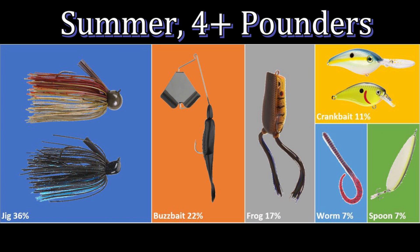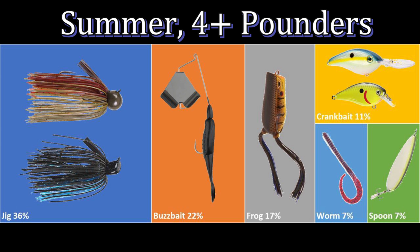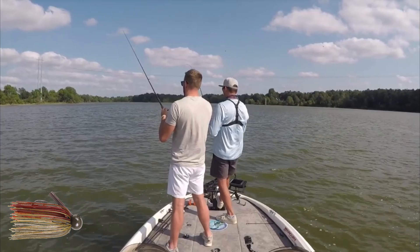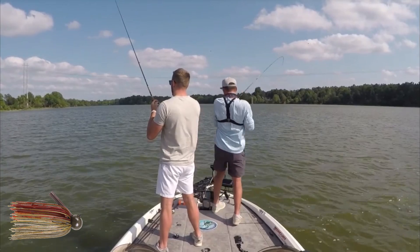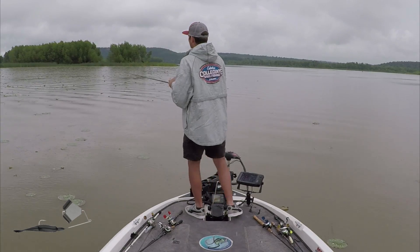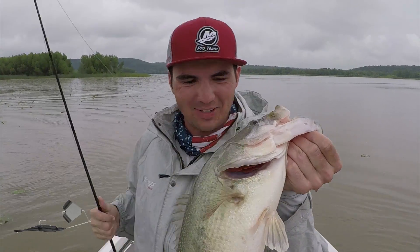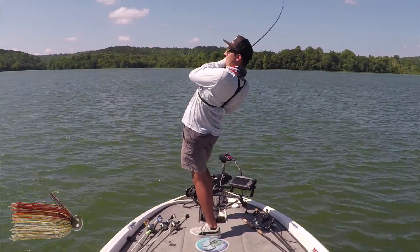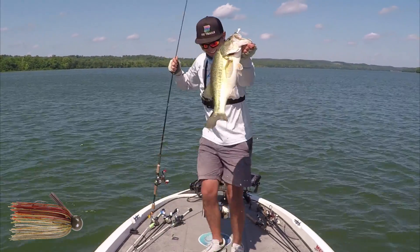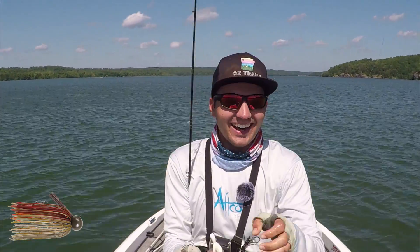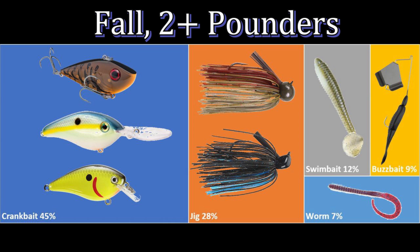Cutting summer data by size: 36% of my four-plus-pounders in summer came on a jig, 22% on the buzzbait, 17% on the frog, 11% on crankbaits, and 7% split between a worm and a spoon. The jig is the best performer in summertime for both numbers and size. When I'm fishing shallow I use topwaters, and when fishing offshore I go with the jig or crankbait, mixing in spoons, worms, and hair jigs for a different look.